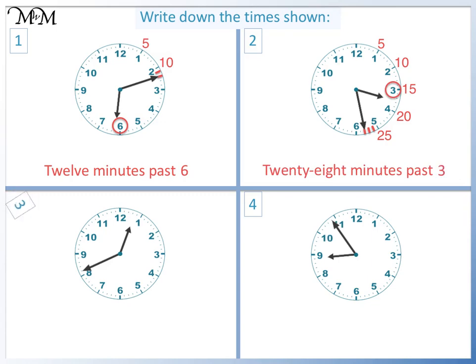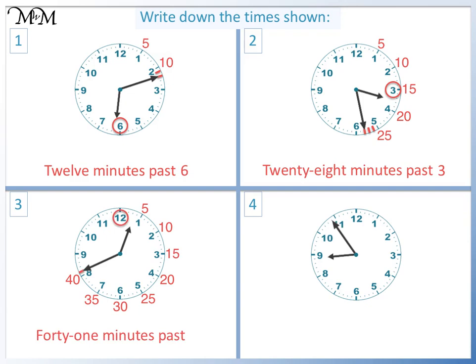Question three. The minute hand is pointing to forty, plus one minute makes forty-one minutes past. The hour hand has moved past twelve, so the time is forty-one minutes past twelve.